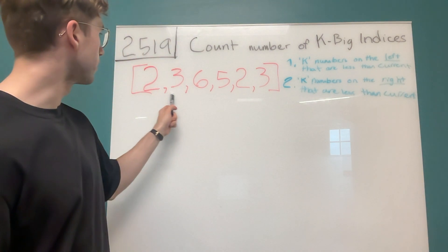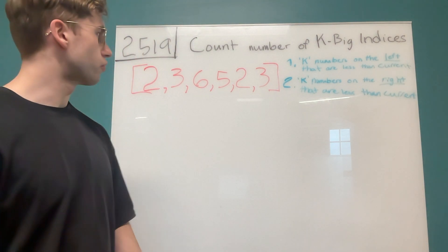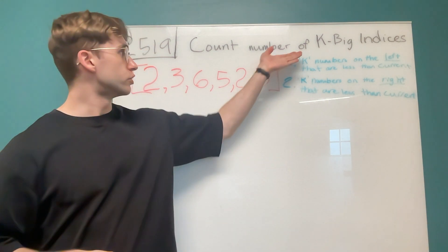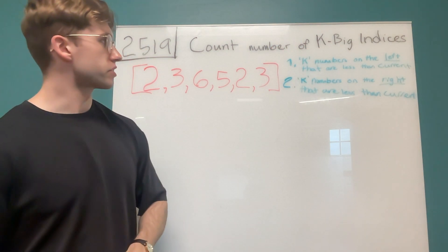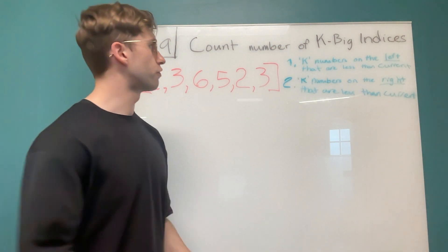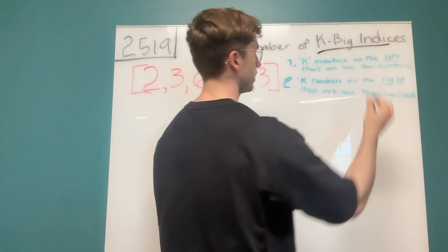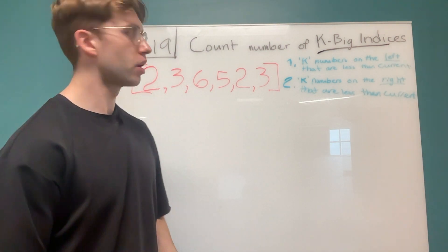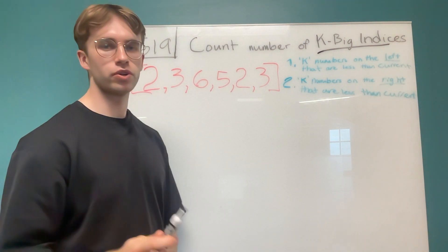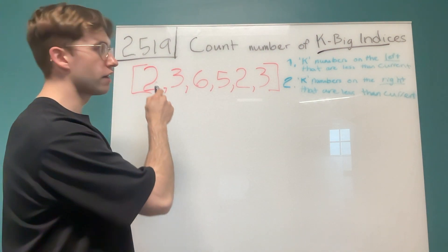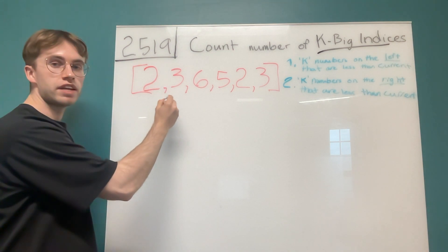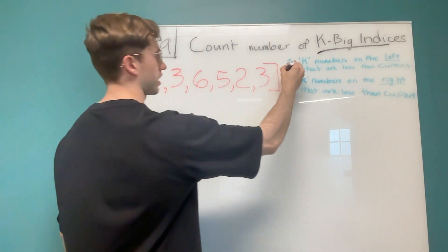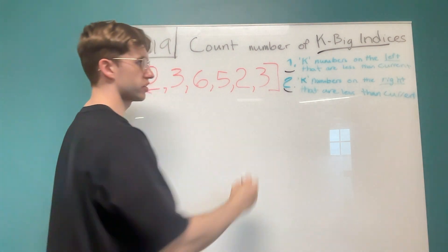You're given an array of integers, and we want to count K-vig indices. For every number in the array, as you're iterating along, you want to check these two conditions.